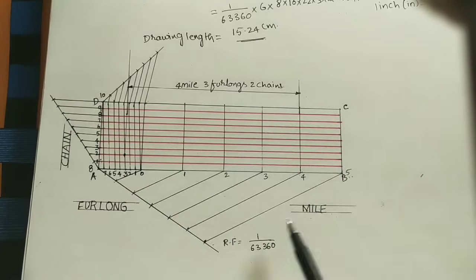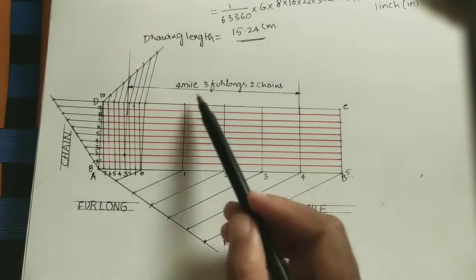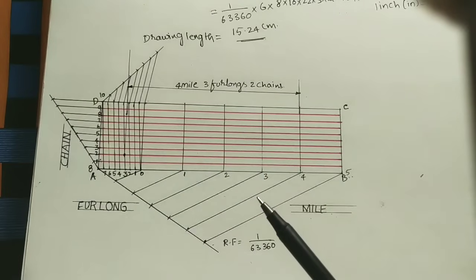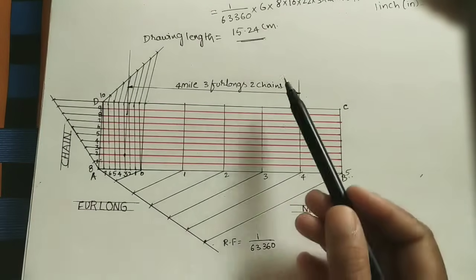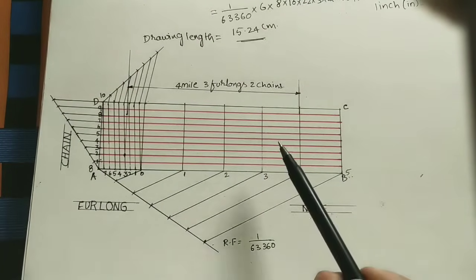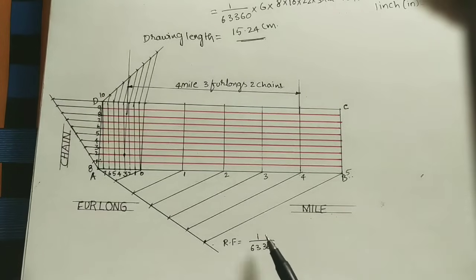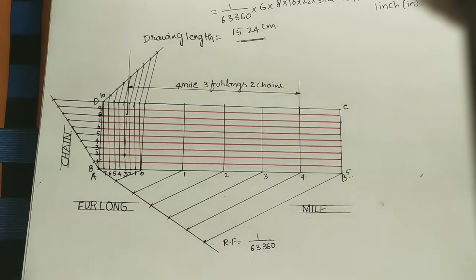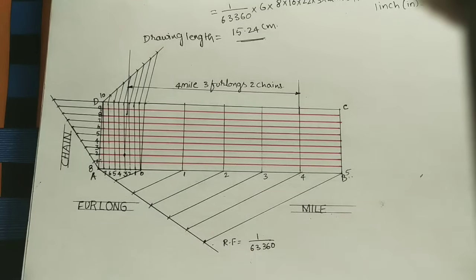In this way we can mark three consecutive units using the diagonal scale. If only two consecutive units are needed, we can use plane scales. For each scale, always mark the RF value. If you like this lecture, press the like button, subscribe to my channel, and share with your friends. Video links for plane scales and other diagonal scales will be in the description box. Thank you for watching.